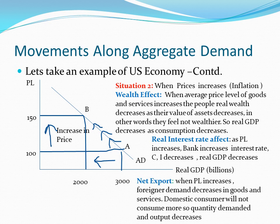The first point is the wealth effect: when the average price level of goods and services increases from 100 to 150, people's real wealth decreases because now they have less money and the value of their assets decreases. In other words, they feel less wealthy. In this situation, real GDP declines because people will consume less and their consumption power will decline.